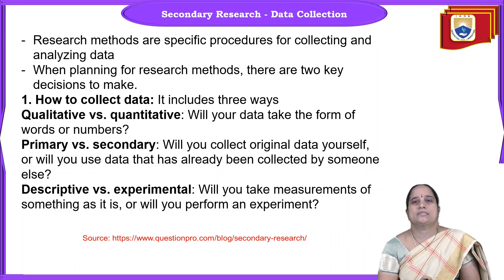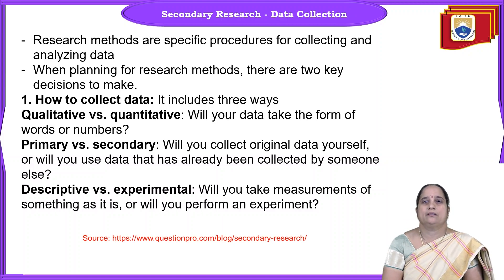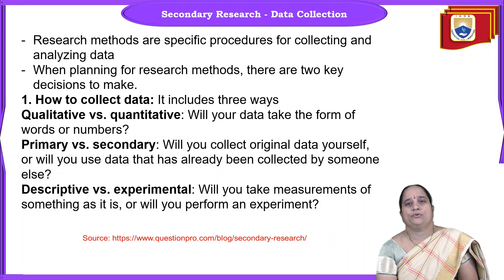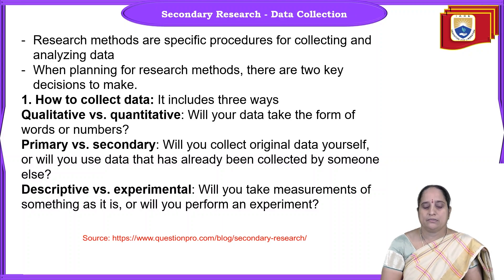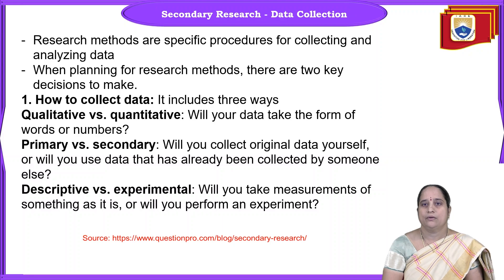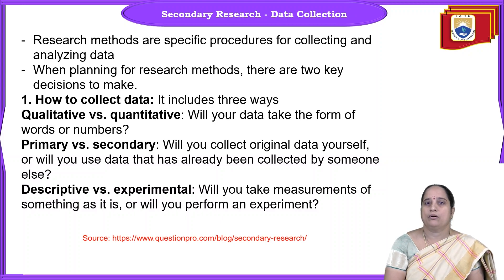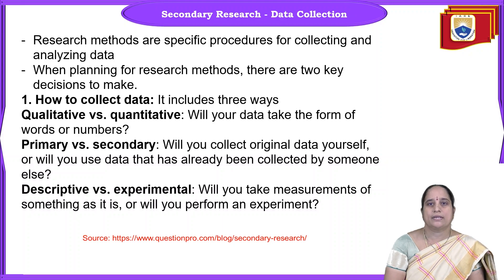The first one is qualitative versus quantitative. We should understand what type of data you would like to go with — for example, any kind of idea or anything that you want to describe about a particular event or a situation, which cannot be quantifiable in terms of numbers. That type of data is known as qualitative. Whereas quantitative means if you can measure with the help of some numeric value — for example, you can measure the association between two variables with the help of correlation analysis, measuring the degree of correlation. That can be measured in terms of facts or figures, like average, standard deviation, and variation. That type of data is known as quantitative data.